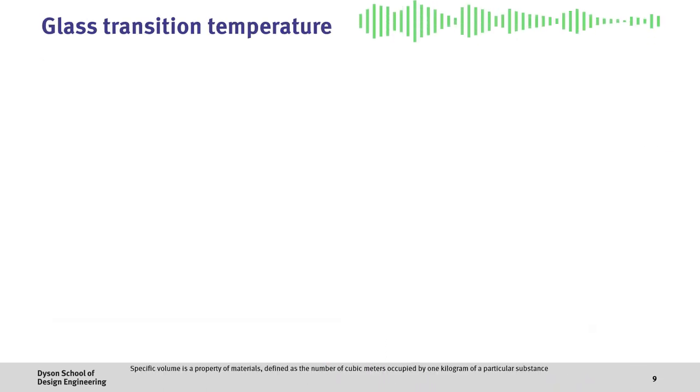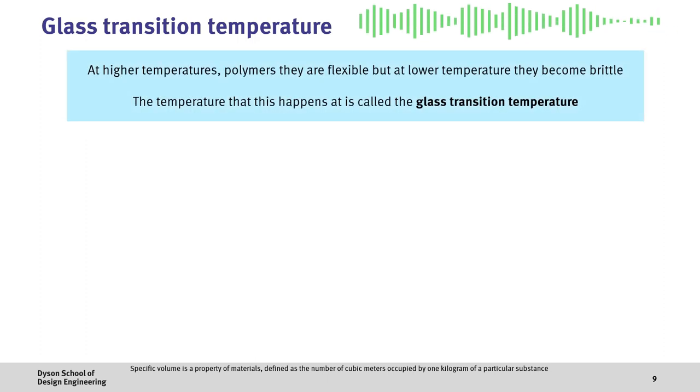Of course, this mechanical behavior is also highly temperature sensitive. Here, at higher temperatures, polymers are generally very flexible, but at lower temperatures, they become brittle. The temperature that this happens is called the glass transition temperature.